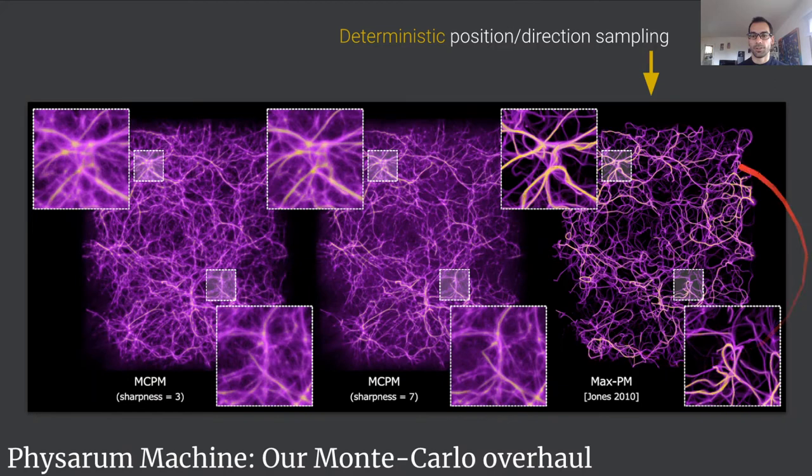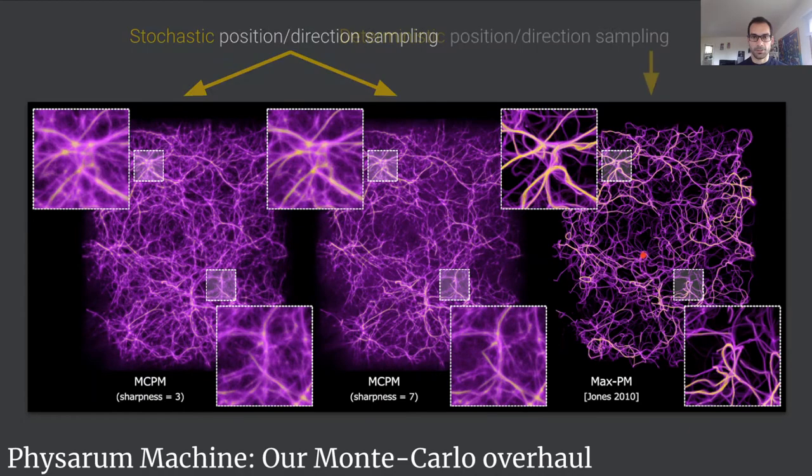On the right you see our adaptation of the prior work by Jones. While this is a beautiful structure, it's actually very sparse and condensed. To overcome that we improved the model by having the agents have a probabilistic or stochastic behavior rather than deterministic. This increased the expressivity of the model and our experiments showed that this is a much better distribution as compared to the real cosmic web distribution.